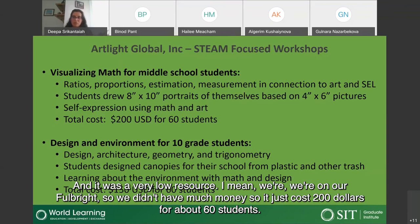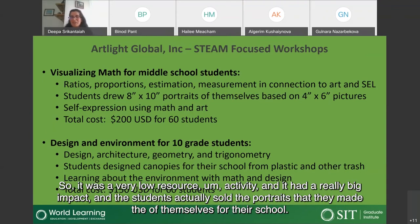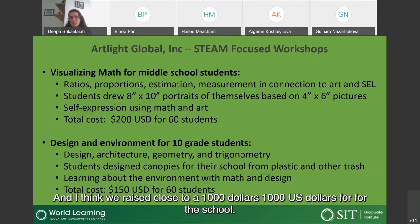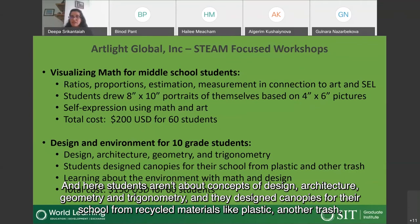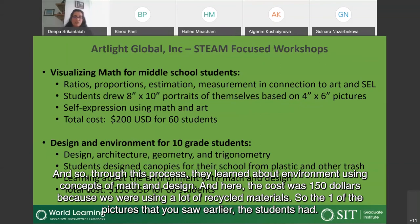The students actually sold the portraits they made, raising close to $1,000 USD for their school. The second project, 'Design and Environment,' targeted 8th to 10th grade students, who learned about design, architecture, geometry, and trigonometry. They designed canopies for their school from recycled materials like plastic and other trash, learning about the environment using concepts of math and design. The cost was about $150 since recycled materials were used.